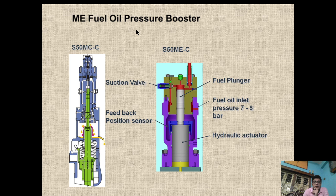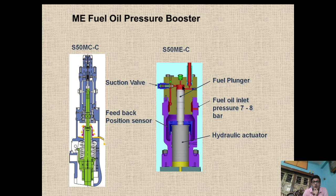As you can see in this slide, this is the modification which we have done in the ME engine series. In the earlier S50MC series, a fuel pump was provided for each individual cylinder unit, which has been replaced with the SCU fuel oil booster unit, basically consisting of a hydraulic actuator where the fuel oil is fed through a suction valve onto the top of the plunger. After that it is pushed and pressure is built up by the servo oil to a fuel injection valve opening pressure, and it goes to a fuel oil high pressure pipe to the fuel injection valve.